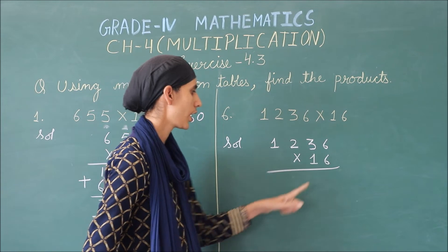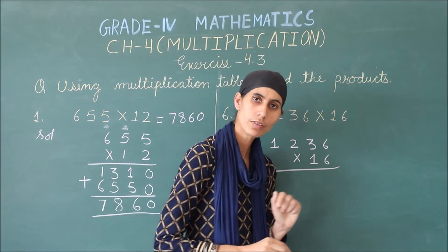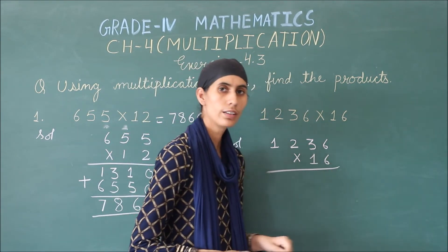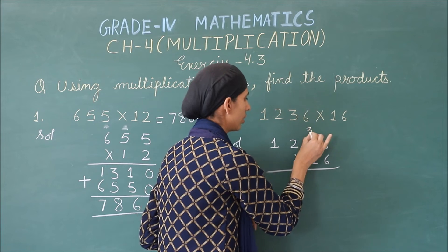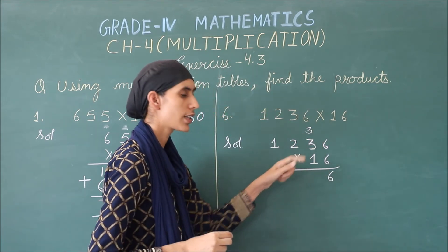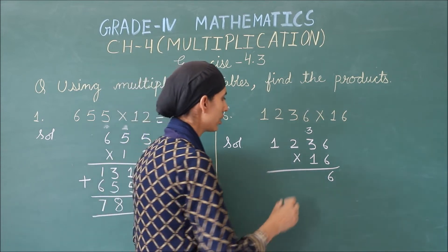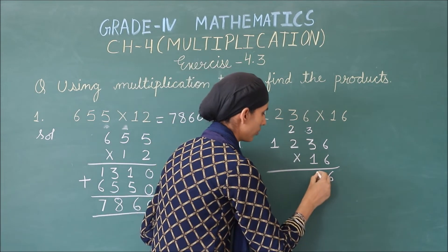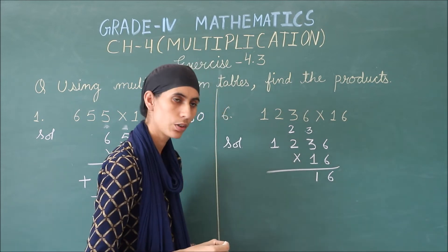So, firstly, we have to read out the table of 6. 6 times 6 are 36. Then, 6 times 3 are 18. 18 plus 3 is 21.